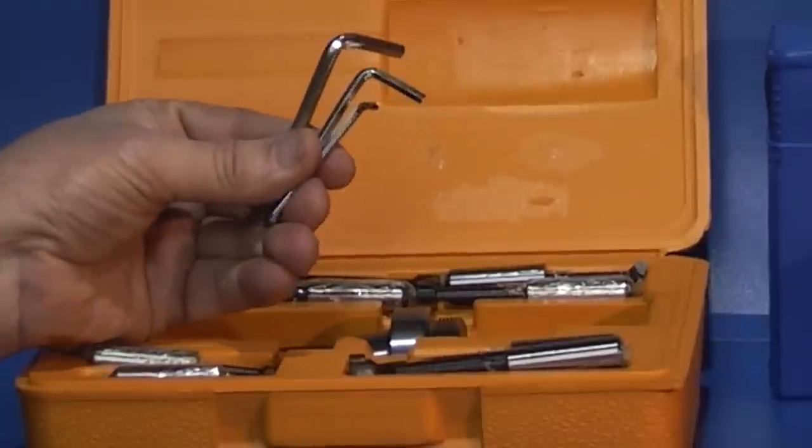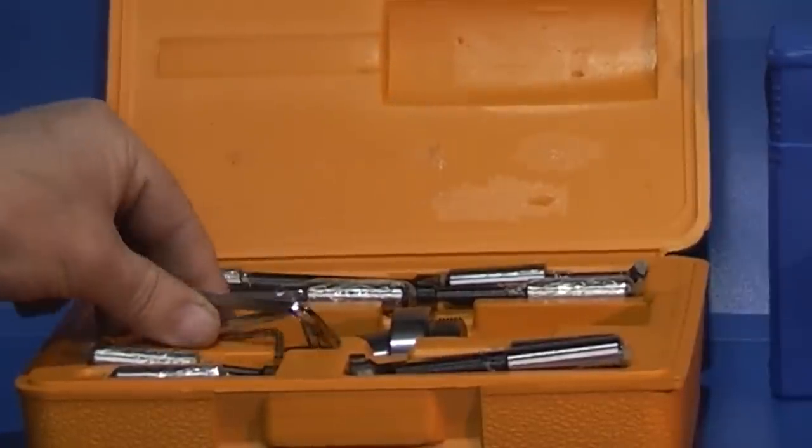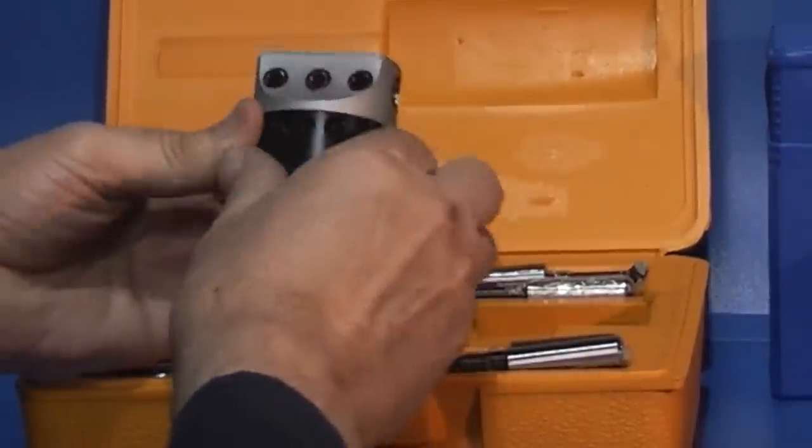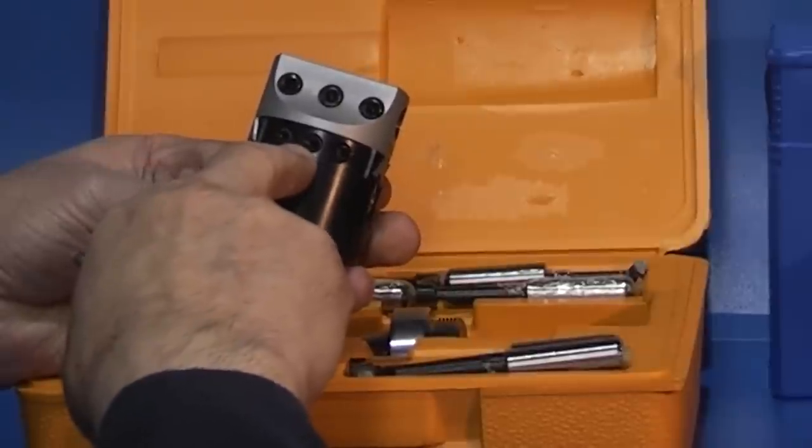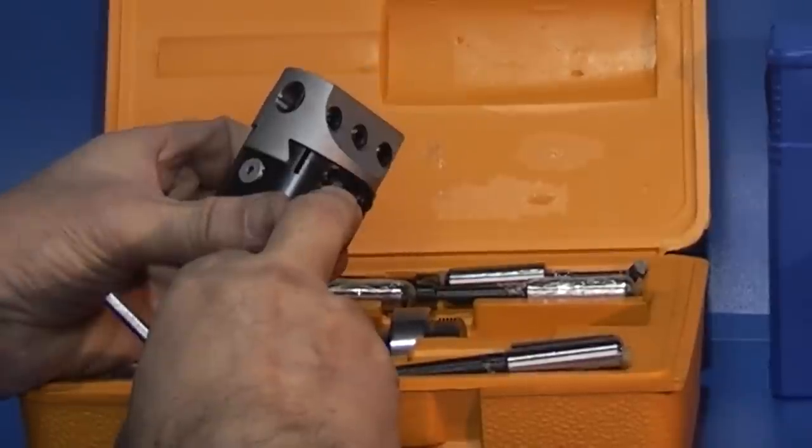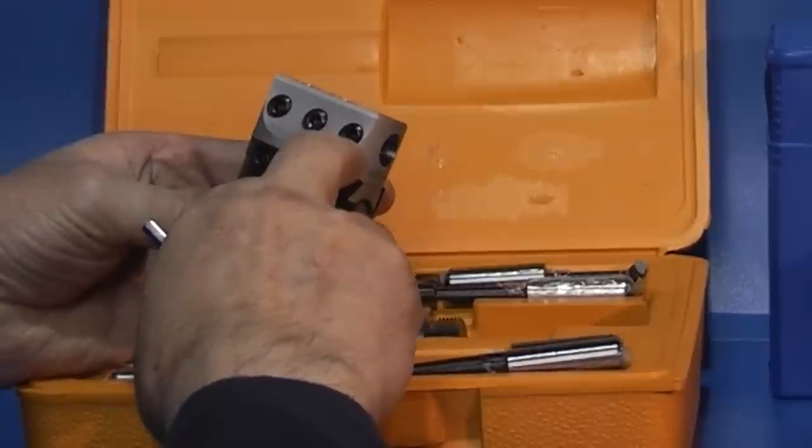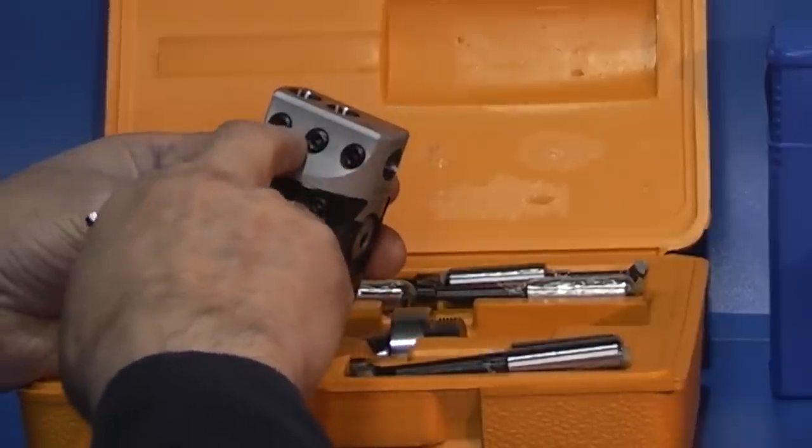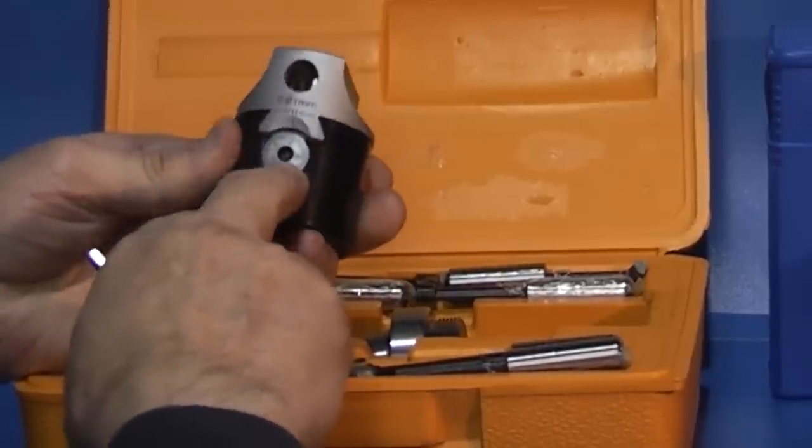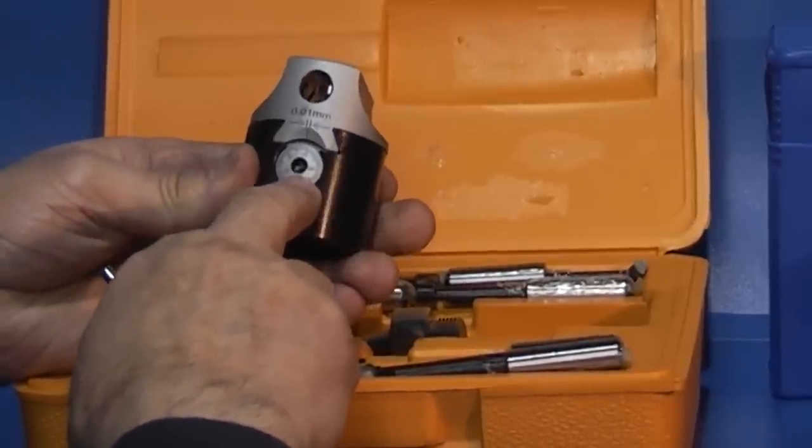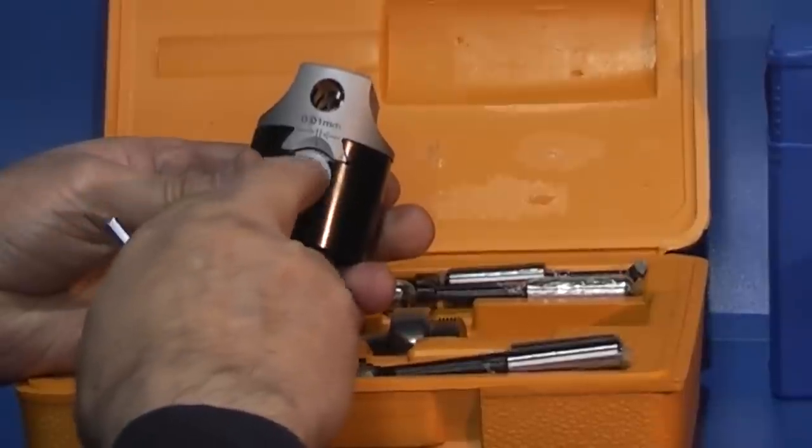The kit comes with three allen keys. The keys are to adjust grub screws to tighten up the slide, for the grub screws which hold the tool, and for adjusting the cut by turning the screw here.